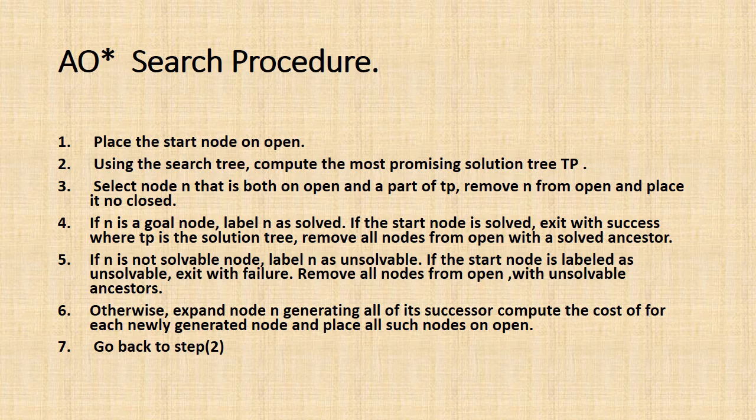Step 5, if n is not solvable node, label n as unsolvable. If the start node is labeled as unsolvable, exit with failure. Remove all nodes from open with unsolvable ancestors. Step 6, otherwise, expand node n generating all of its successors. Compute the cost for each newly generated node and place all such nodes on open. Step 7, go back to step 2.